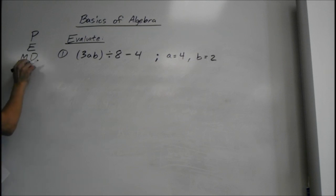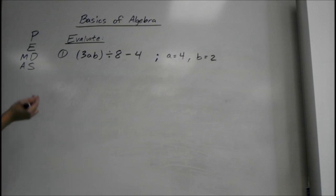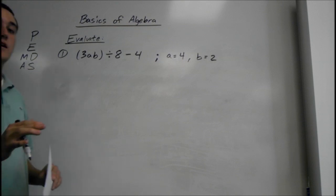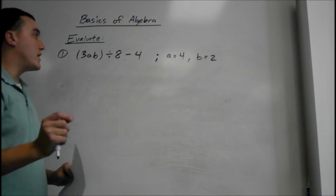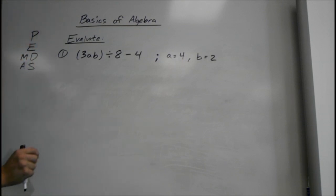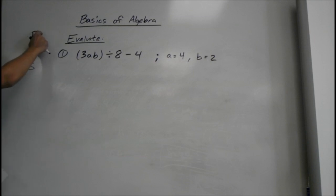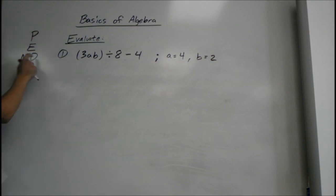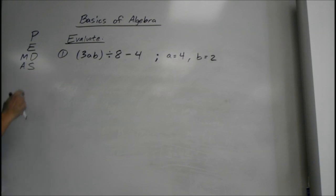The reason I write multiplication and division side by side, same as addition and subtraction, is those are the same order — it doesn't matter which order you do them in. Parentheses comes first, then exponents, then multiplication and division, then addition and subtraction.